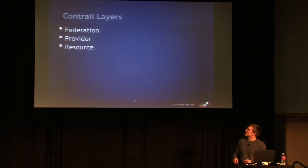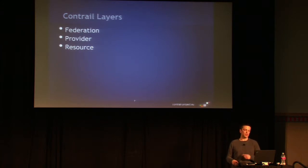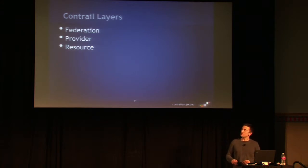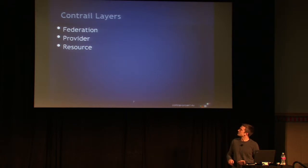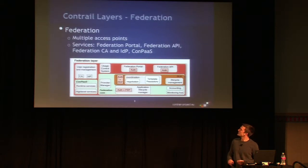The architecture of Contrail consists of three main layers: we have the federation layer, the provider layer, and the resource layer. Let's drill in a bit on the federation layer.